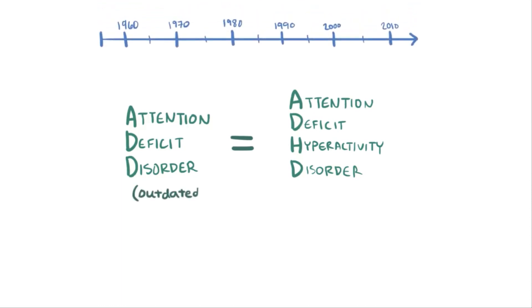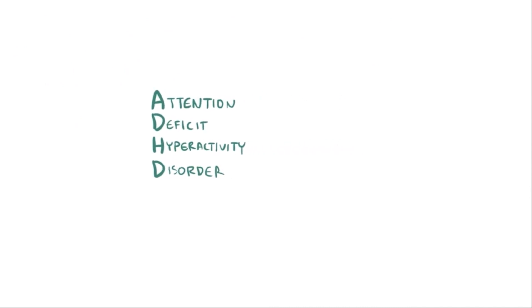ADD is an outdated term used prior to 1987, after which it evolved into ADHD to encompass more of the symptoms that people with ADHD often experience, which in addition to being inattentive, includes both hyperactivity and impulsiveness.